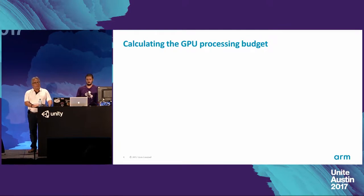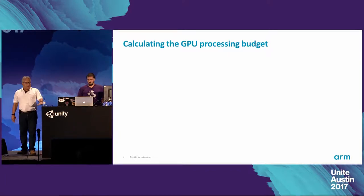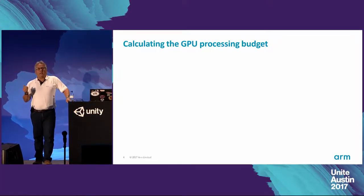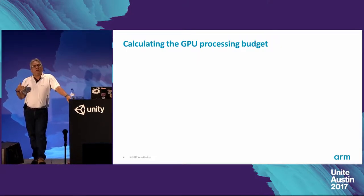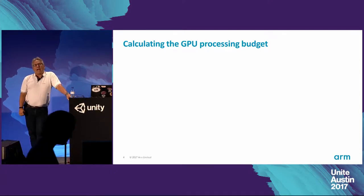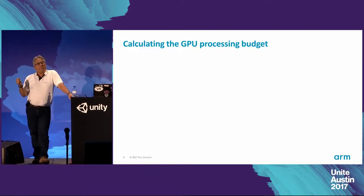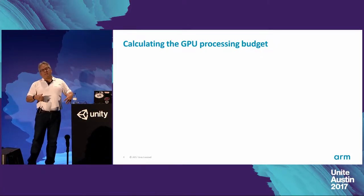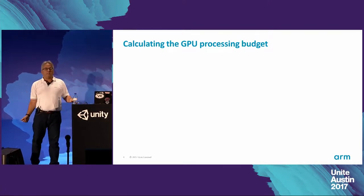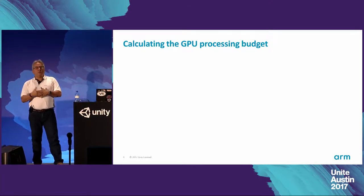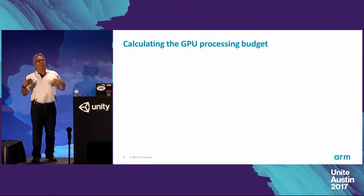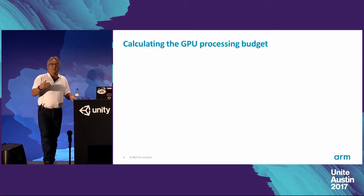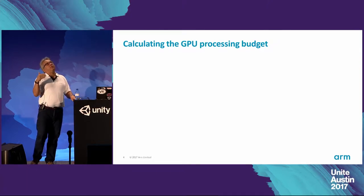Let's start with the GPU processing budget. It is something really important. Big game studios have a well-tuned pipeline to plan their game based on the hardware and the GPU processing budget. I couldn't say the same for indie developers. In many game events where I've been doing booth duty, the standard question is: I got this kind of performance problem — how can I improve it? My first question is always: are you familiar with the profiling tools and the GPU processing budget?